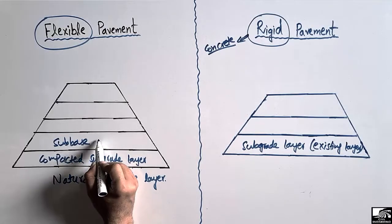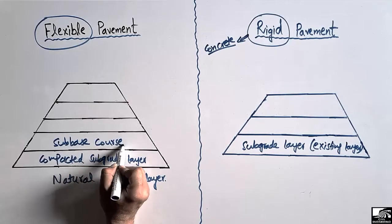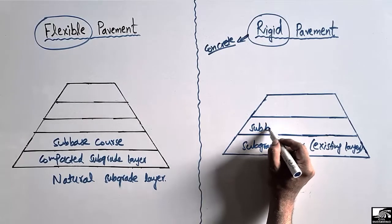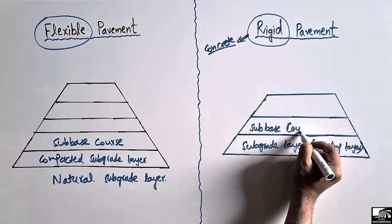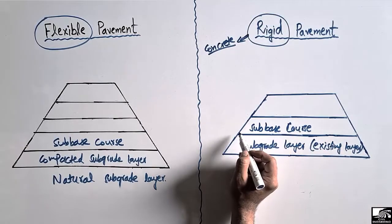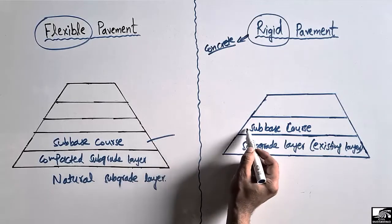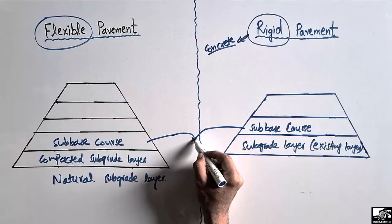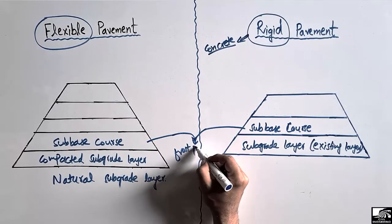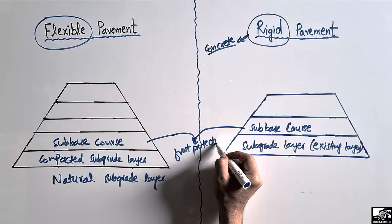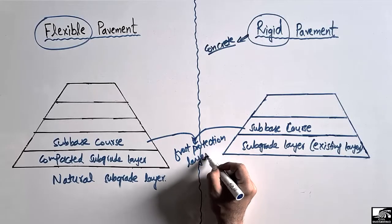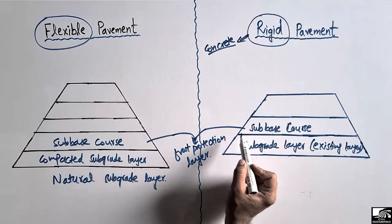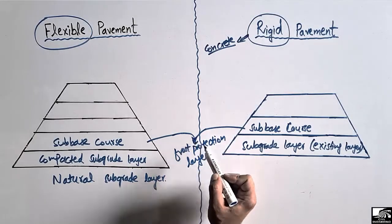On top of the compacted subgrade layer, we provide a subbase course in the case of flexible pavement, and also in rigid pavement there is a subbase course provided on top of the subgrade layer. This subbase course is also known as the frost protection layer because it is provided to resist the formation of frost during the winter season.